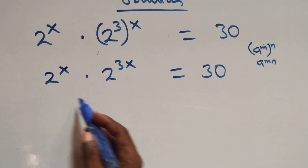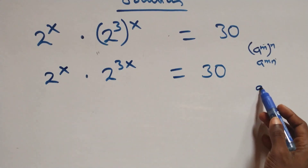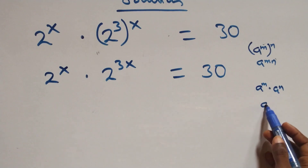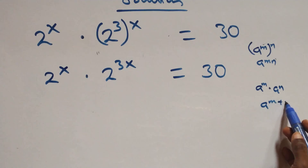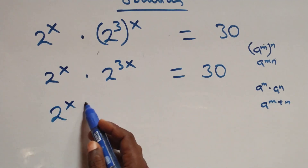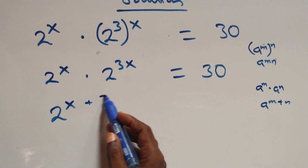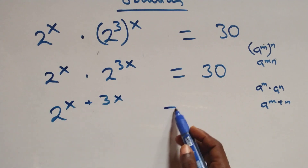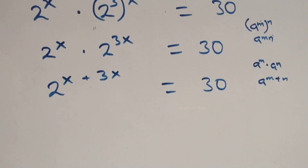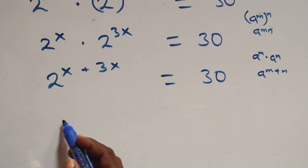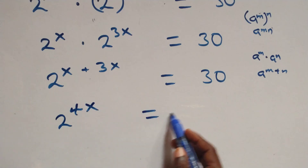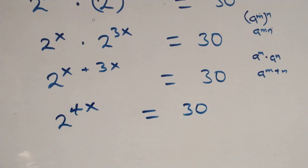Then this follows. When we have a raised to power m times a raised to power n, this is the same thing as a raised to power m plus n. Applying this, we can write it as 2 raised to power x plus 3x equals to 30, which becomes 2 raised to power 4x equals to 30.